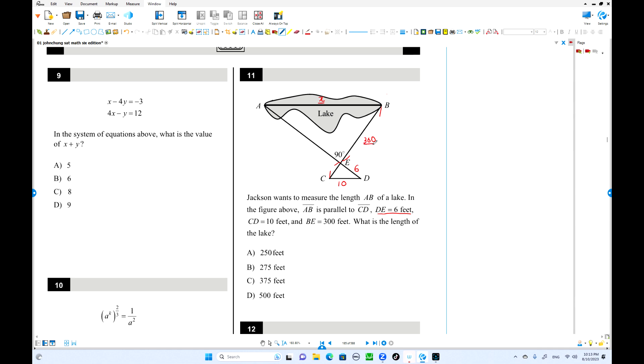DE is 6 and CD is 10 and BE this side is 300 feet. So what is the length of AB? The corresponding side of BE equals CE. That's right. So we need to find the length of CE. This is the corresponding side of 300.